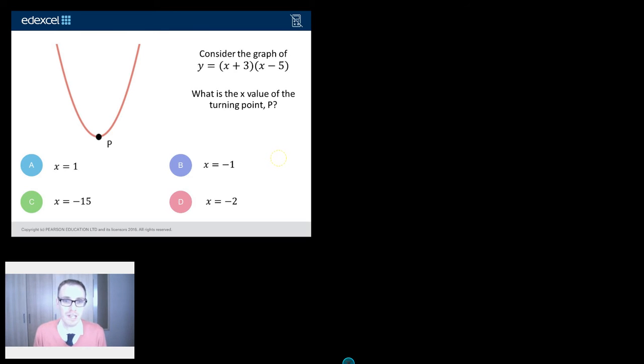So it's been contributed by Edexcel and it goes like this: consider the graph of y equals x plus 3 times x minus 5. What is the x value of the turning point p? What is the x value? Now there's a couple of things here.